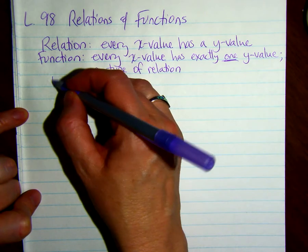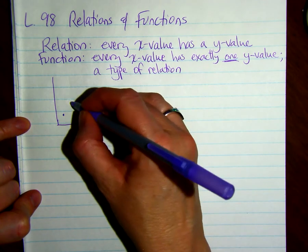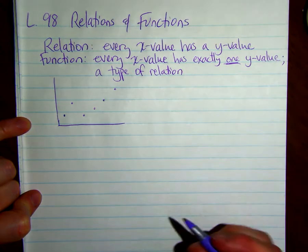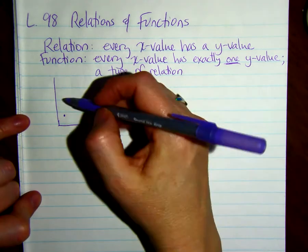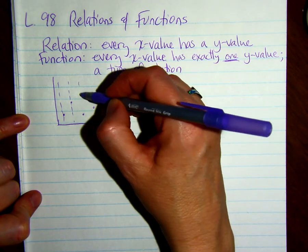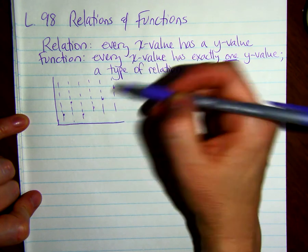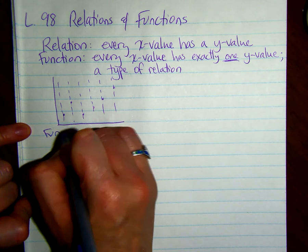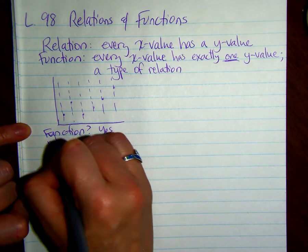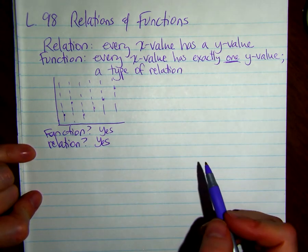So when we have some points here on a graph, we want to know if this is a function. If we look at vertical lines through these points, if the lines that we draw only go through one point, then it is a function. So is this a function? The answer is yes. And is it a relation? Well, if it is a function, then for sure it's a relation because all functions are relations.